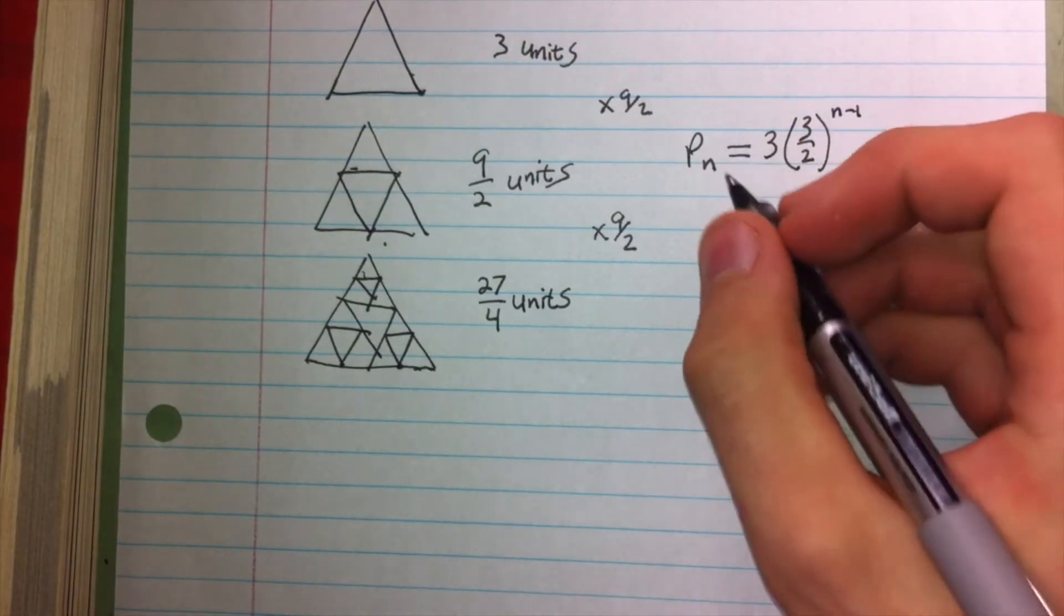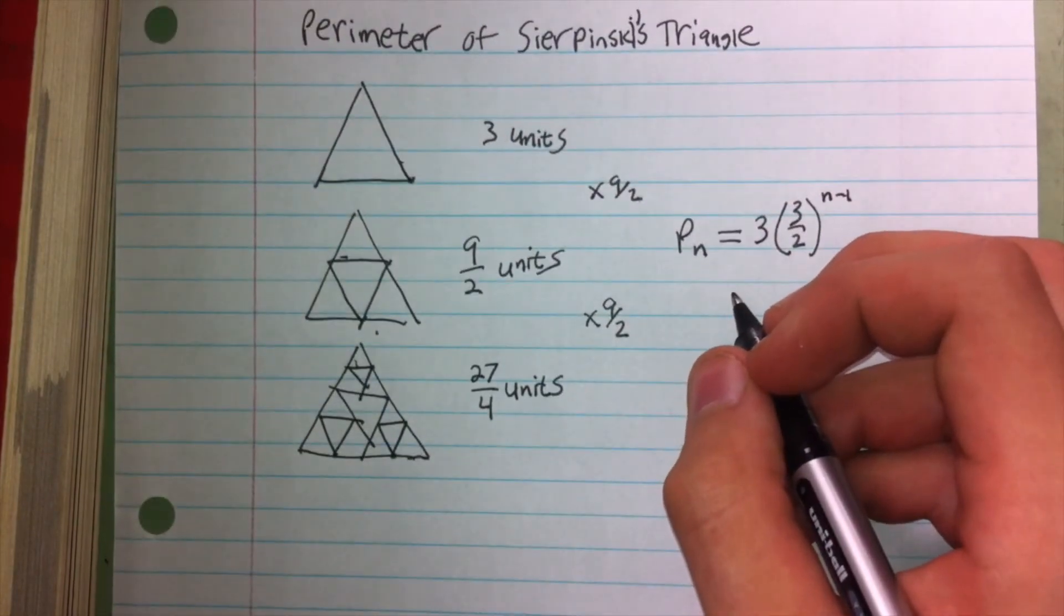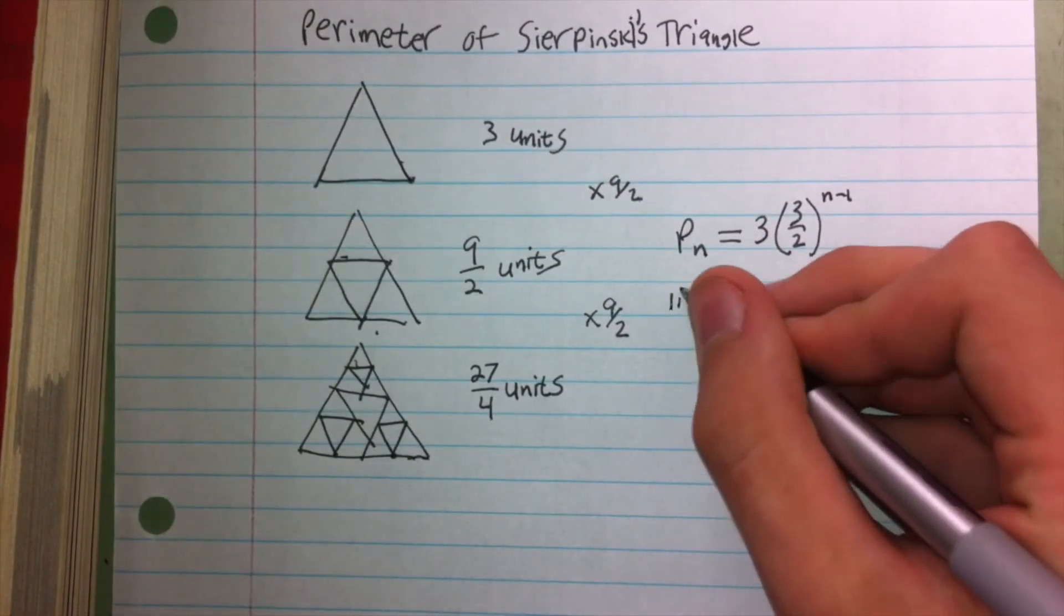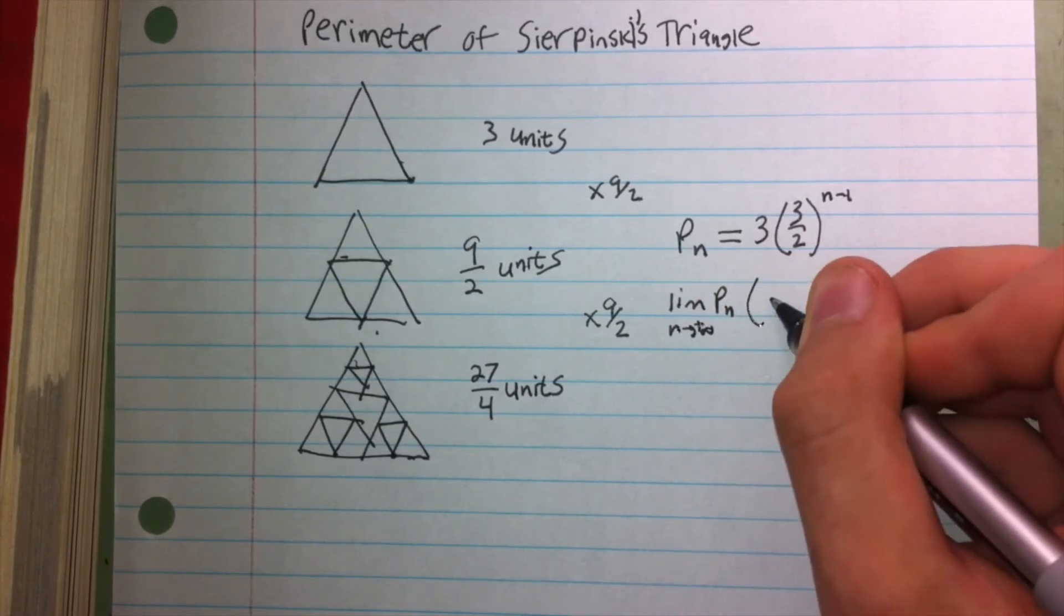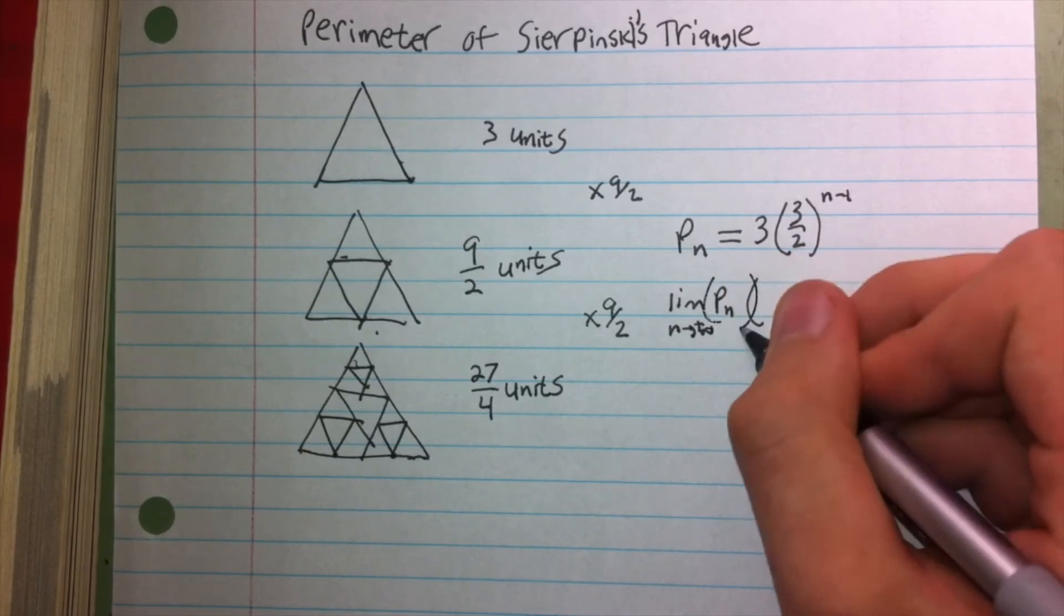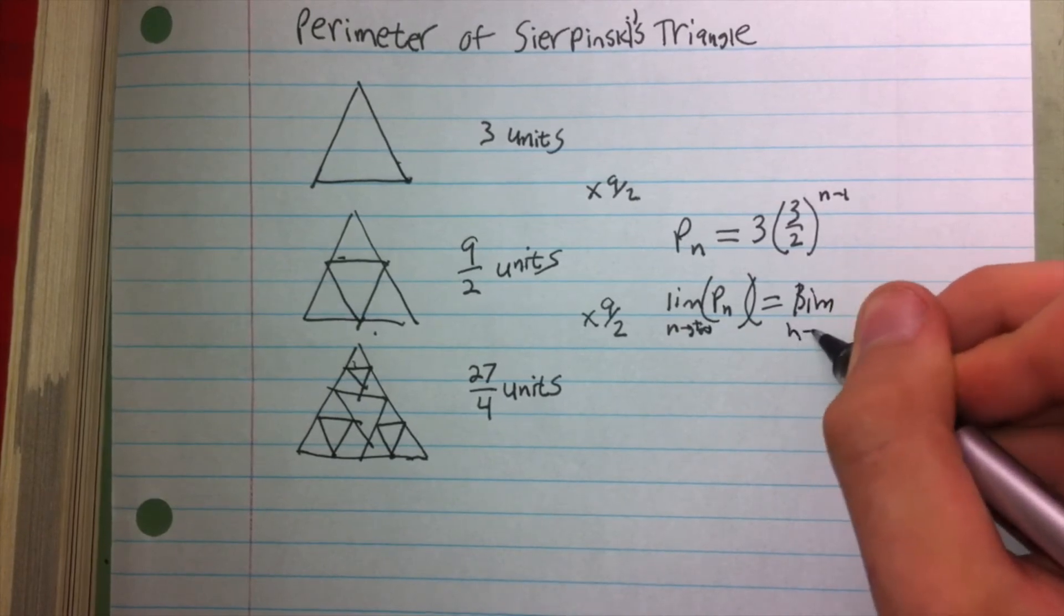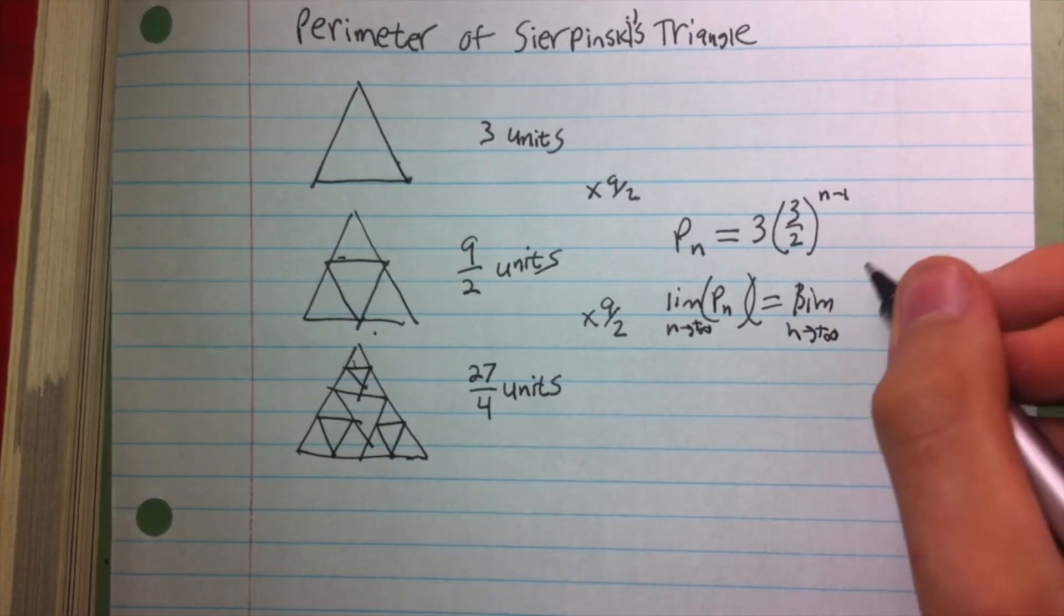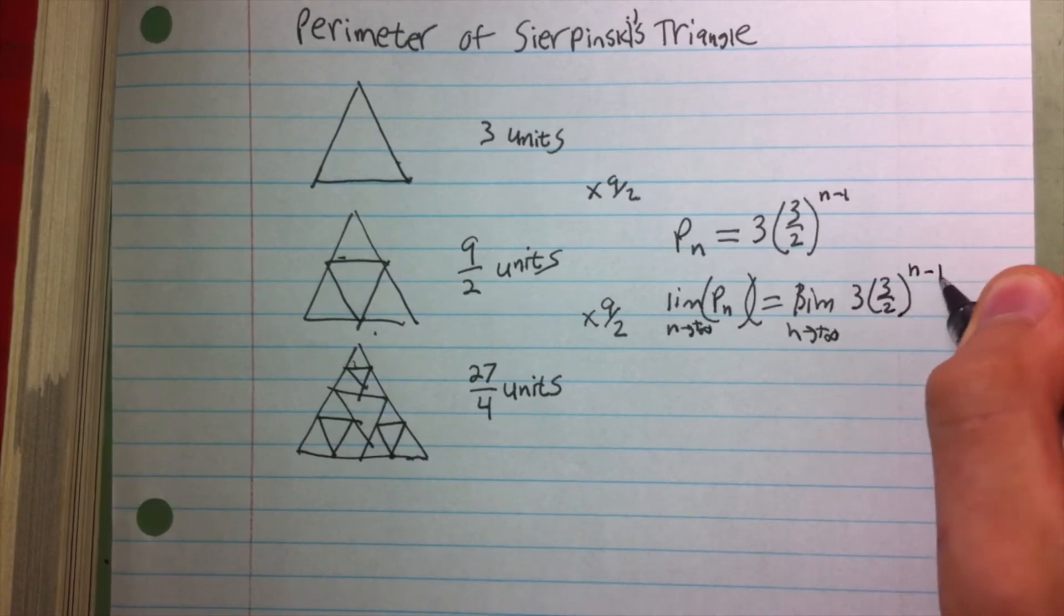And so in order to calculate the perimeter after we've done an infinite amount of iterations, we'll take the limit of the perimeter as n approaches positive infinity of P sub n, which is going to equal the limit as n approaches positive infinity of three times three halves to the n minus one power.